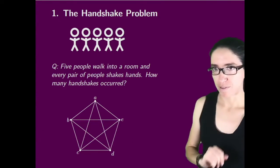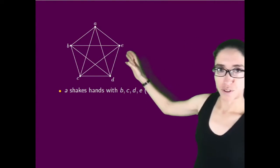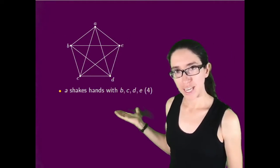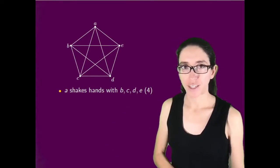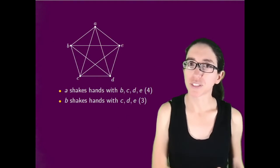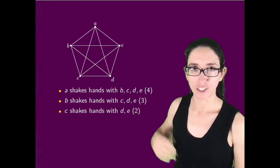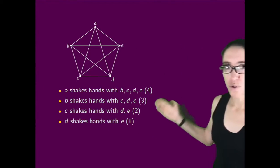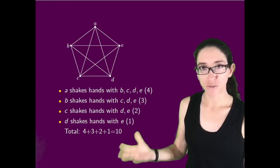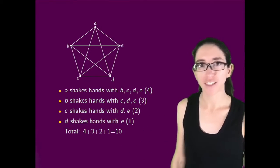Let's solve the five-person problem in a more systematic way. Person A shakes hands with four different people - B, C, D, and E. That's four handshakes. Person B has already shaken hands with A, so person B then shakes hands with C, D, and E. That's three handshakes after that. C still has to shake hands with D and E, and finally D shakes hands with E. So total, we have four plus three plus two plus one, which is ten handshakes. This is just another way of reframing the problem, but we get the same answer.